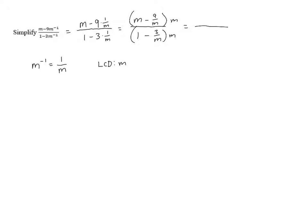When we distribute the m in the top, m times m is m squared, and we've got minus. In the second term, there's going to be an m that cancels because we've got an m in the bottom and an m in the top. So we're just left with that 9.